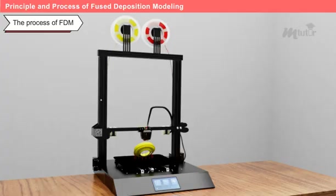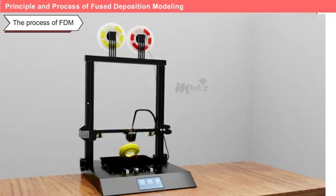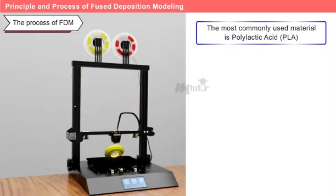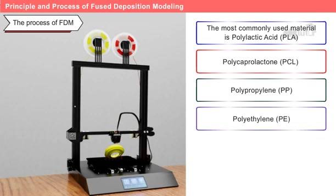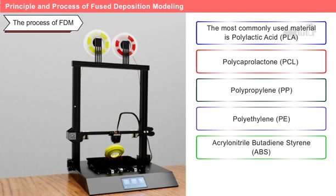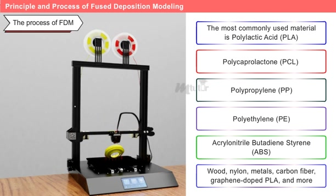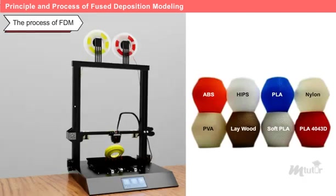When it comes to materials used in FDM, we have various options. The most commonly used material is polylactic acid, but we can also work with polycaprolactone, polypropylene, polyethylene, acrylonitrile butadiene styrene, wood, nylon, metals, carbon fiber, graphene-doped polylactic acid, and more. With FDM, we have the flexibility to choose the right material that suits our prototype's specific needs and properties.